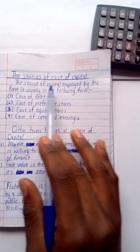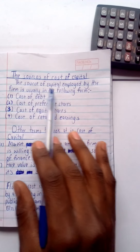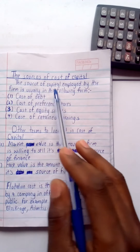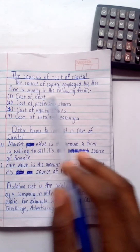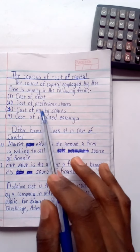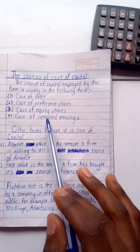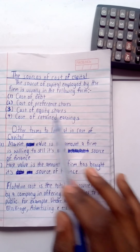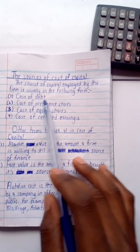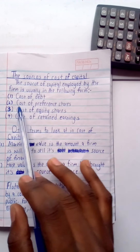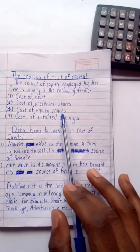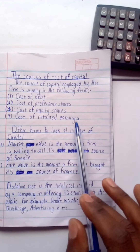With the sources of cost of capital, we are having the sources of capital being employed — that is: debt, preference shares, equity shares, and retained earnings. With this, we are going to look at the cost of debt, the cost of preference shares, the cost of equity shares, and the cost of retained earnings.